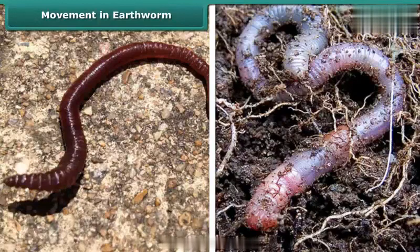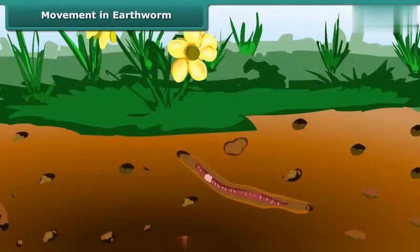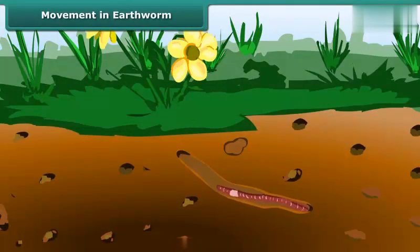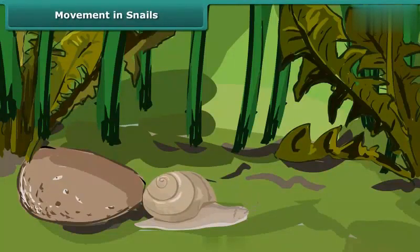Earthworms move easily on hard and slippery surfaces. They have tiny stiff hair-like projections called bristles under their body, and they grab the soil with the help of these bristles. Earthworms first stretch and then contract their muscles to move. As a result, they cover only a small distance with every move. A slimy substance secreted by the earthworm also helps it to move.